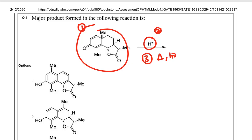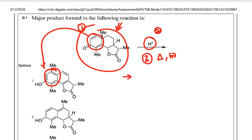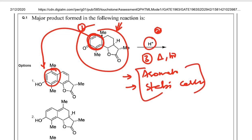If you observe all three important features of an organic reaction, you can guarantee the correct product. Looking at the given substrate, it has stereochemistry and a six-membered ring with two double bonds, so there is the possibility to form a six-membered aromatic ring. The driving force of this reaction involves two factors: the first is aromatization in this ring.